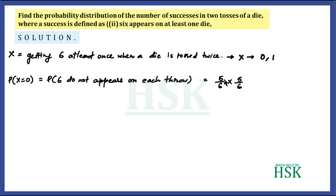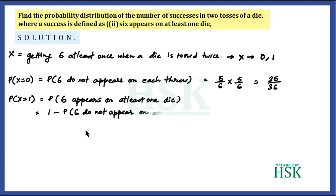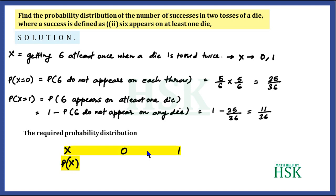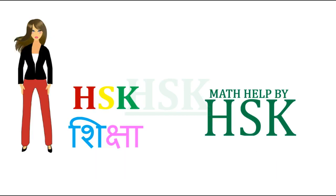Five-sixths is multiplied twice because in both throws a number not equal to six is obtained, giving P(X=0) = 25/36. The probability of one success means six appears on at least one die, which equals 1 − P(six does not appear on any die) = 1 − 25/36 = 11/36. So the required probability distribution is: P(X=0) = 25/36, P(X=1) = 11/36. This is the required answer for Part 2.